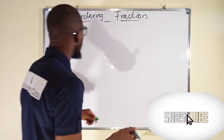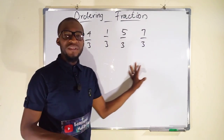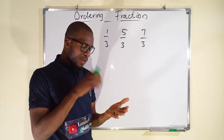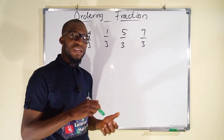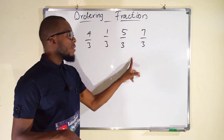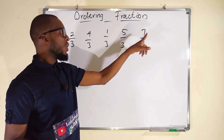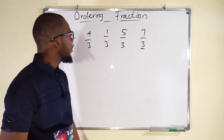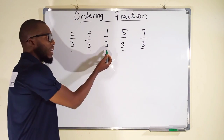Example. If you look at all these fractions, they have the same denominator. So to identify the fraction that is the biggest among them, it is that fraction that has the highest numerator. You can see that seven is the highest number among the set of numbers, so we consider this as the biggest fraction, followed by the next, then the next, and lastly the smallest.